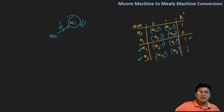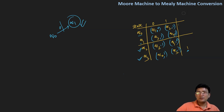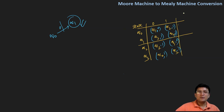This way we have converted the given Moore machine to the Mealy machine. In the Mealy machine, the output alphabet is not mentioned because the outputs are associated with the transitions, so I'm skipping that part. When doing this in your examination by table conversion, you should draw the table of the Moore machine separately, then draw the table of the Mealy machine separately.